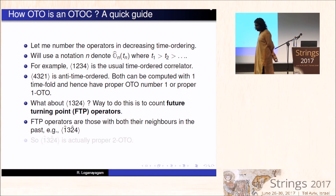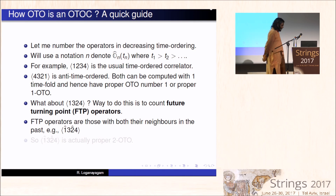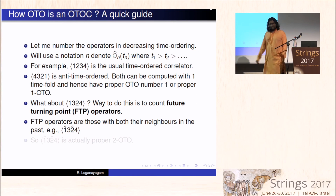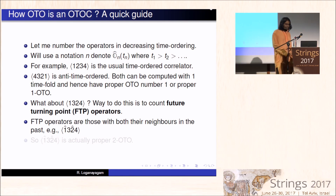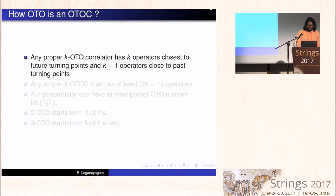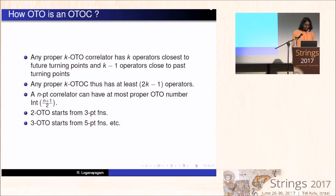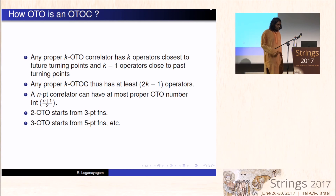The way to count is to count what I call future turning point operators — operators where both neighbors are towards the past. If you have two future turning point operators, it is clear that you need two time-folds to calculate them, so the OTO number of this particular correlator is two. A proper K-OTO correlator has at least K operators closest to the future turning points, and there are also past turning points — operators whose both neighbors are towards the future. Hence they should have at least 2K minus one operators.